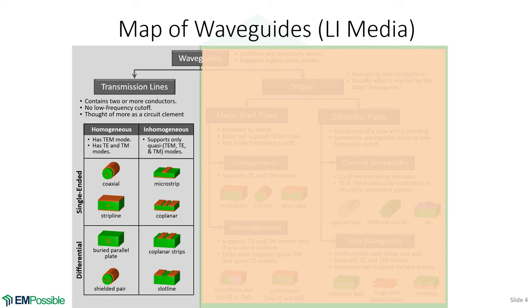We're going to focus specifically on transmission lines. One of the reasons we seem to forget that transmission lines are waveguides is because they work all the way down to DC. The cutoff for higher-order modes exists at such a high frequency that it's often not close to where we're working, so those waveguide properties just aren't something we consider. To be a transmission line, it has to have two or more conductors — think of electricity: there's a plus and a minus. Because of that, there is no cutoff frequency; we can operate all the way down to DC.